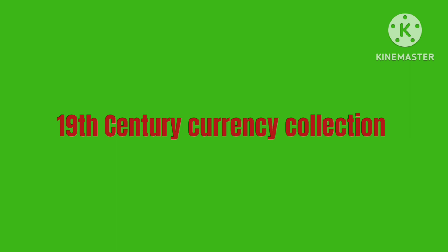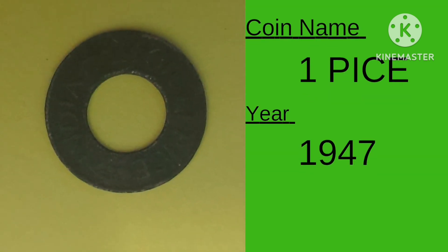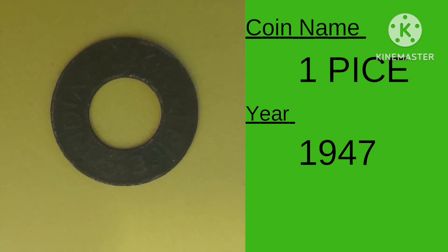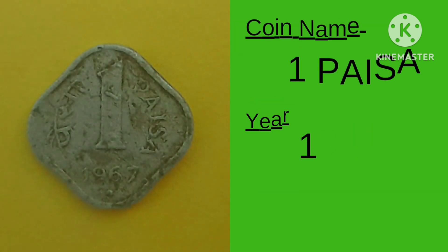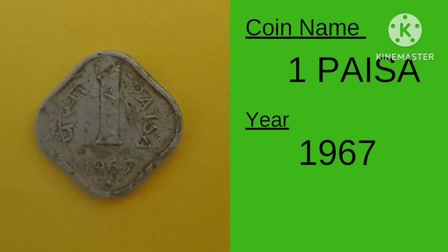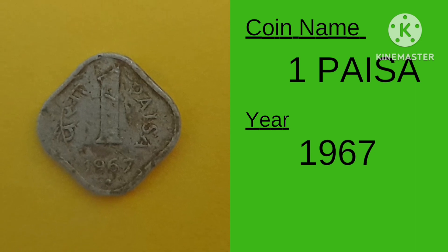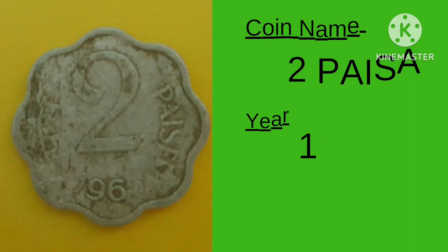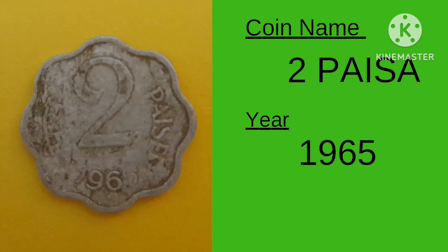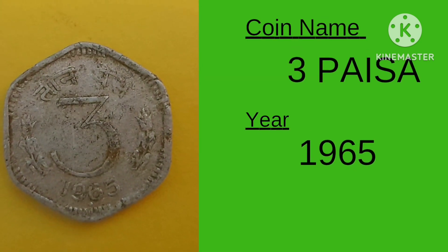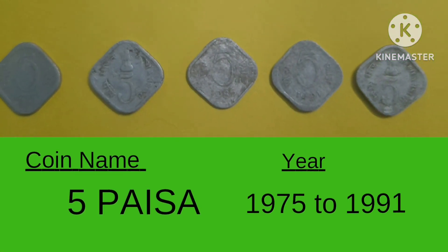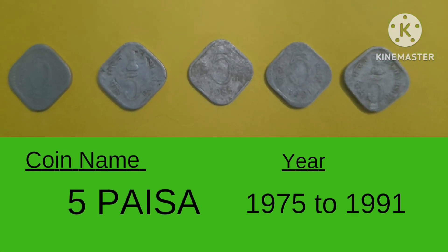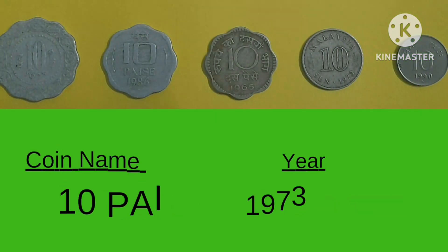19th century currency collection. Coin name: 1 paisa, year 1947. Coin name: 1 paisa, year 1967. Coin name: 2 paisa, year 1965. Coin name: 3 paisa, year 1965.